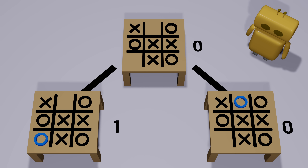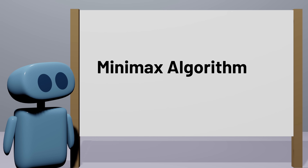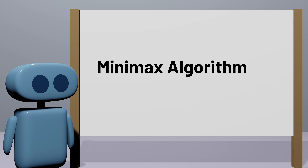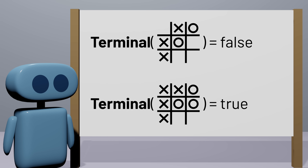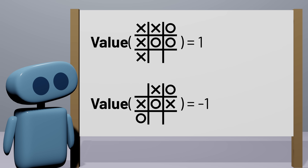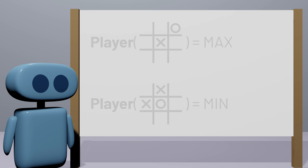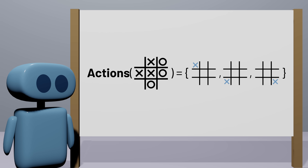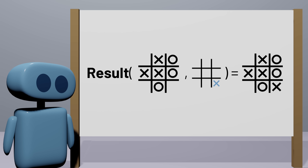We can try to formalize that idea into a more precisely defined algorithm for Minimax. The algorithm will rely on certain information about the game. First, we need a function terminal that determines whether a game state is a terminal state. We need a utility function to get the value of a terminal state — a value the max player wants to maximize and the min player wants to minimize. We also need a function called player that takes a game state and tells us whether it's max or min's turn. A function actions that takes a game state and gives us all possible actions. And finally, a function result that takes a state and an action and tells us what the new state will be after taking that action.